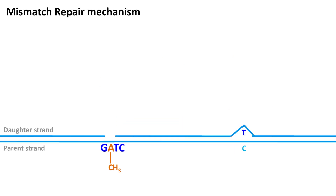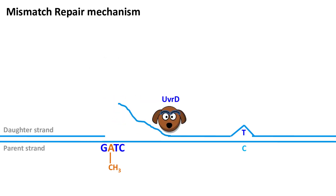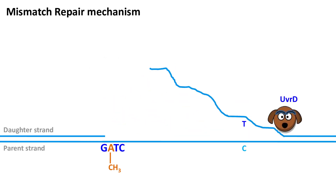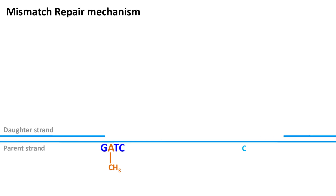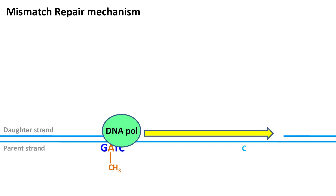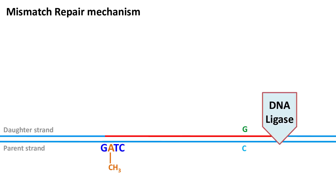In the next step, UVRD, which is also known as helicase 2, unwinds the cleaved strand. The unwound strand is then removed and cleaved by an exonuclease enzyme. Next, DNA polymerase 3 replicates the DNA and adds the correct nucleotides. Finally, the gap is sealed by the formation of a phosphodiester bond by DNA ligase.